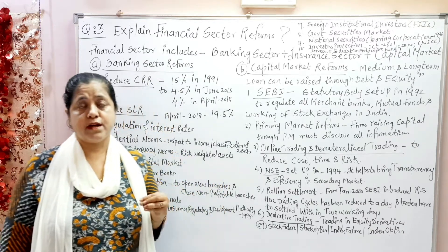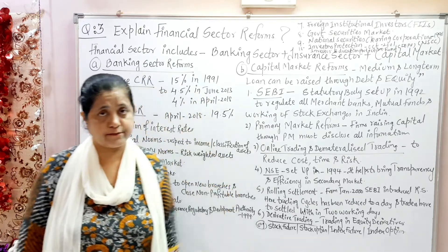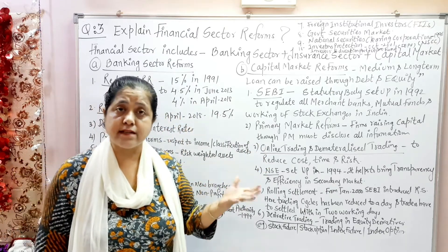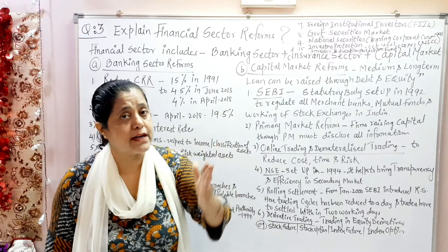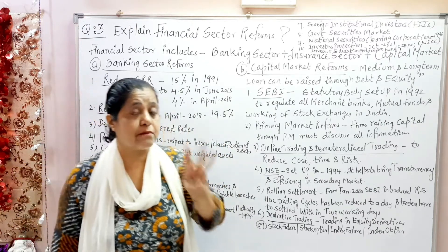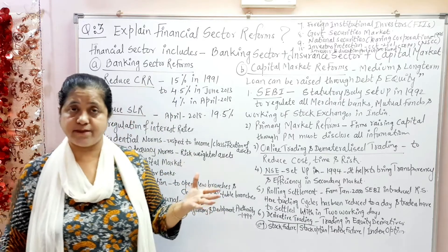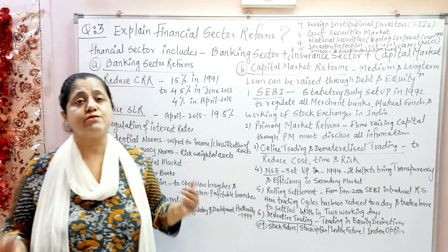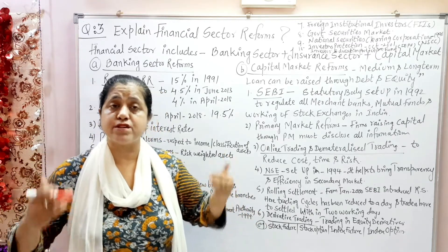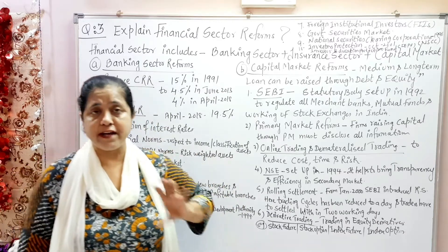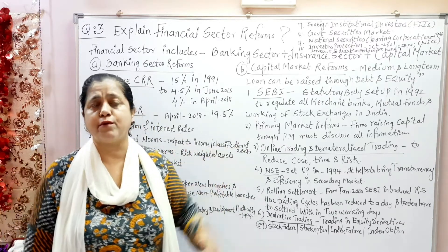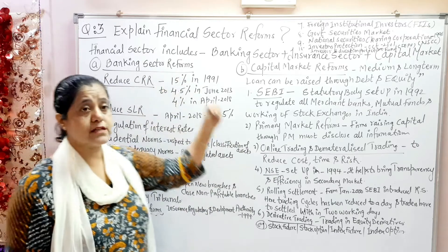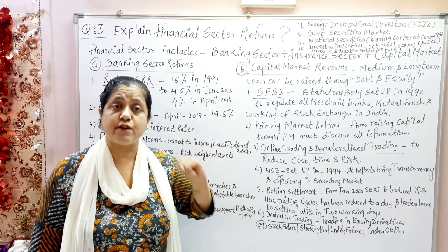Today, we will look in detail at what reforms were done in the financial sector. The financial sector has three parts: the banking sector, the insurance sector, and the capital market. Important financial measures were taken across all three of these parts.